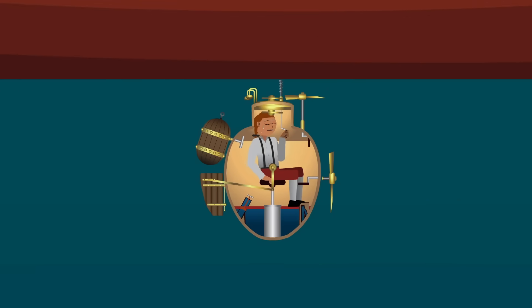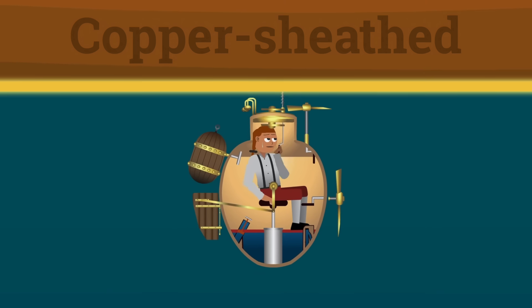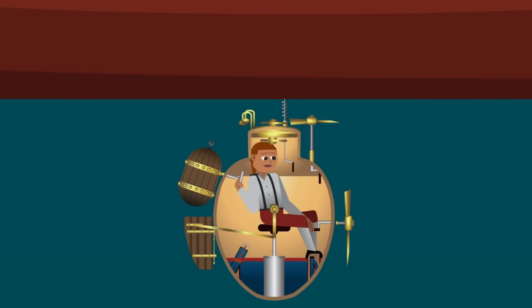The Turtle failed. It couldn't drill into the hull of the British warship because it was copper sheathed. And because they had limited oxygen, they had to abandon the mission and release the explosive charge harmlessly into the harbour.